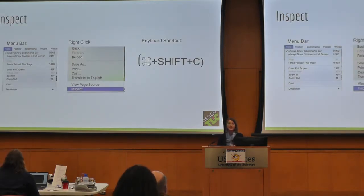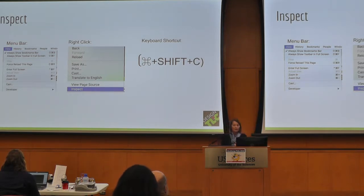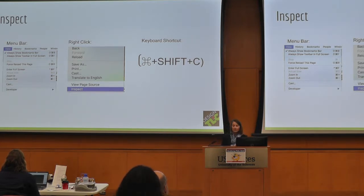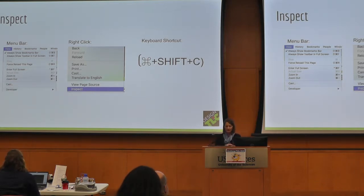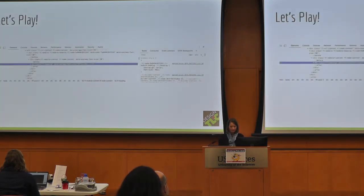So in order to use the inspector, you can achieve it in Chrome in a few different ways. You can simply right-click and click Inspect. You can use the menu bar. You can also use the Chrome extension menu on the far right-hand side, or you can use a keyboard shortcut of Command+Shift+C on a Mac. So now is the fun time where we can play a little bit.